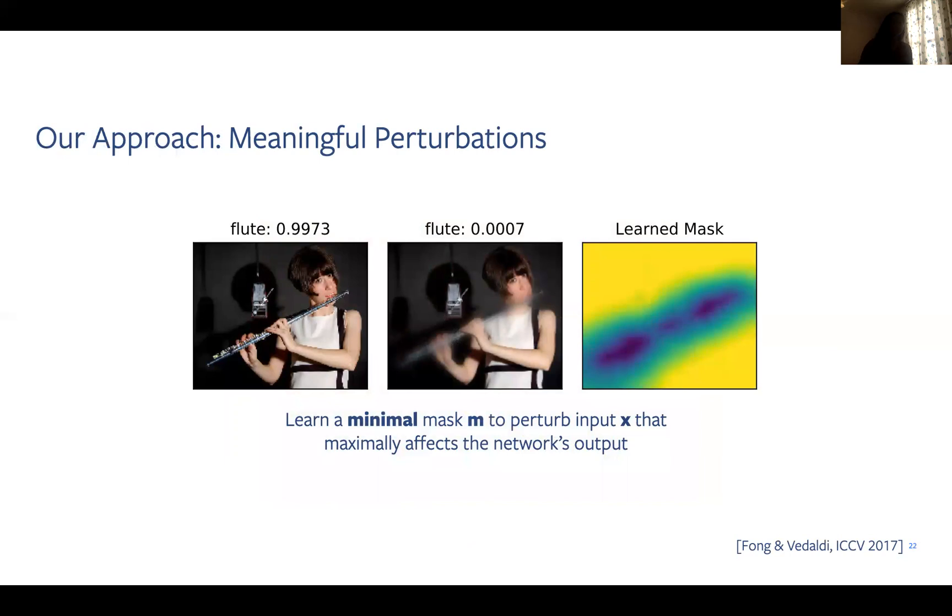Motivated by this setup, in 2017 we introduced a method called meaningful perturbation in which we learn a minimal mask M that's used to perturb an input image X in such a way to maximally affect the network's output. By learning the best explanation mask, our method is able to consider a wide range of possible sizes and shapes. In this example, we see that our method learns a mask that successfully blurs out the flute, causing a drop in the network's prediction for the presence of a flute. We learn a mask with the smallest area because it's a succinct, interpretable summary of the network's behavior. Without this constraint, we could learn a mask that blurs out the whole image, but this would be uninformative as we're really interested in knowing what are the essential parts of an image.